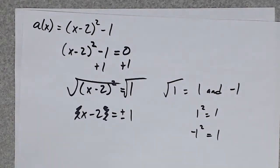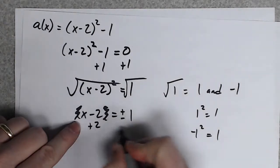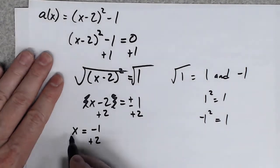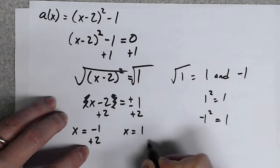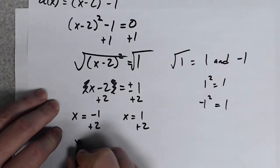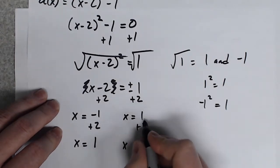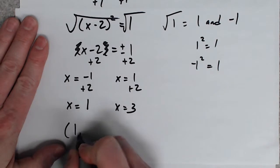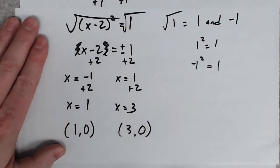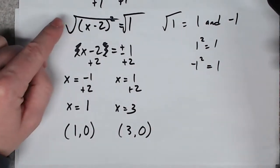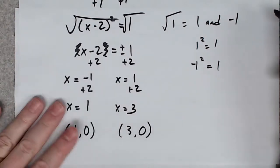Since there's a plus or minus, this becomes two problems. x equals negative 1 plus 2, and x equals positive 1 plus 2. Negative 1 plus 2 is 1, and 1 plus 2 is 3 — just like we saw on the graph. So the x-intercepts are (1, 0) and (3, 0). If you've got the function in vertex form it's not too bad — just remember the plus or minus when you take the square root.